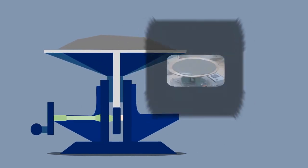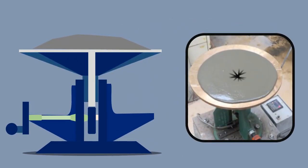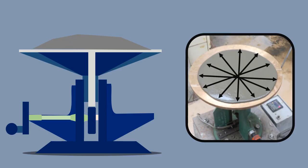The diameter of the concrete spread is measured in about 6 directions to the nearest 5 mm and the average spread is noted.